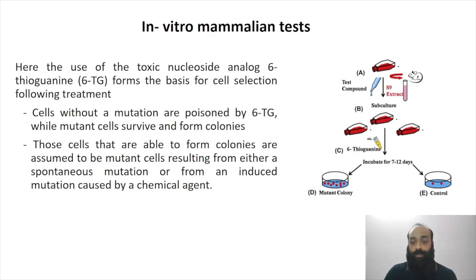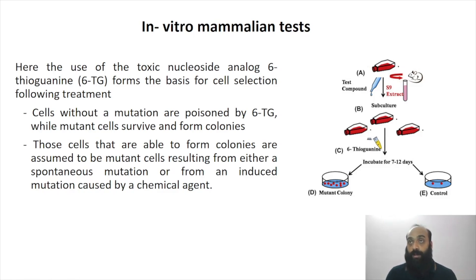In most cases, a rat liver extract referred to as the S9 extract is also used, because the chemical being tested may produce metabolites that are more toxic, and those can then be tested for their mutagenicity.